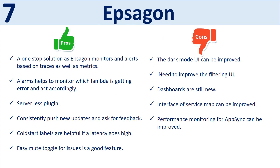Pros of Epsagon include being a one-stop solution that monitors and alerts based on traces and metrics, helping monitor which Lambda functions are getting errors, a nice serverless plugin with consistent updates and feedback requests, helpful cold start labels to detect high latency, an easy mute toggle for issues, and very helpful indexing tags for searching specific fields in traces. Cons include alerts functionality still being a work in progress, dark mode UI needing improvement, filtering UI needing improvement, alerting filters not yet matured, dashboards being new, service map interface needing improvement, and app sync performance monitoring needing improvement.